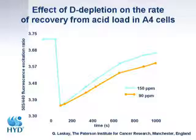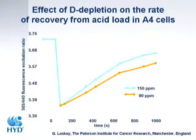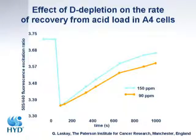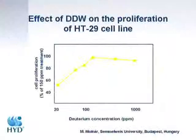In that experiment we made an acid load, bringing down the pH in the cell to about pH 3. We then checked the amiloride-sensitive sodium-hydrogen antiport — how it can work and how it can recover the pH in the cell. The curve is different depending on the deuterium concentration, suggesting that the sodium-hydrogen antiport is sensitive to deuterium concentration, and that can modify the activity of that transport system.